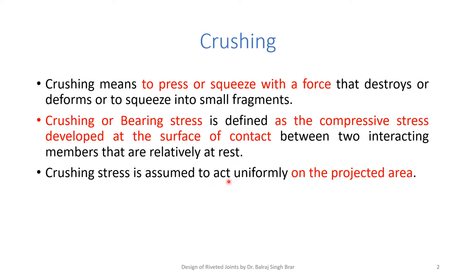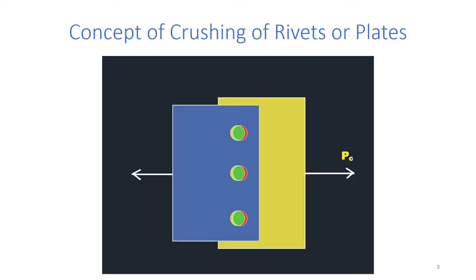Crushing stresses are assumed to act uniformly on the projected area. We have to find out the compressive stress developed at the surface of contact, and it is measured on the projected area. Crushing will be observed in rivets or plates for whichever material has less strength.